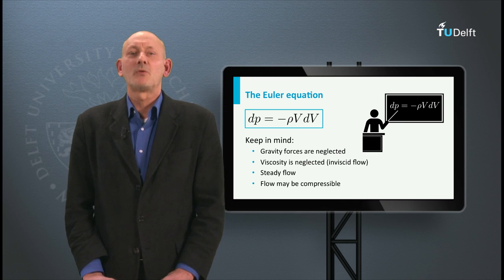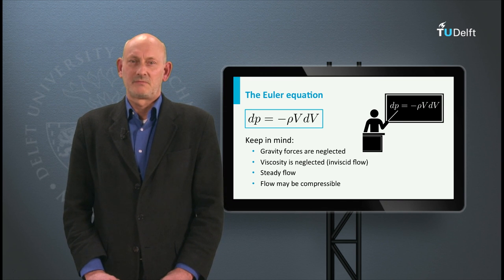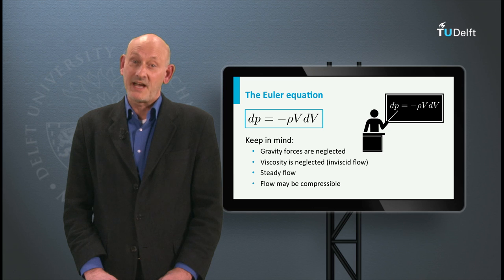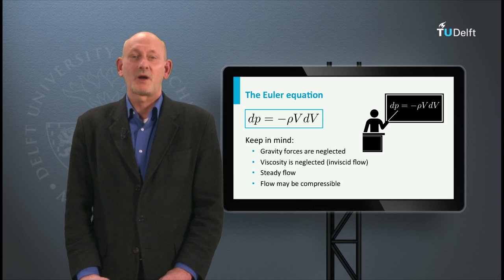The relation we derived is known as the Euler equation. Leonhard Euler was a Swiss mathematician born in 1707 and he was a student of Johann Bernoulli, the father of Daniel. In the next lecture we will hear more about the Bernoulli family and Euler.